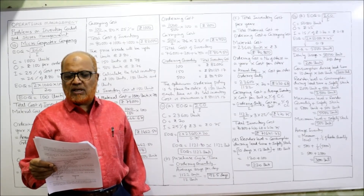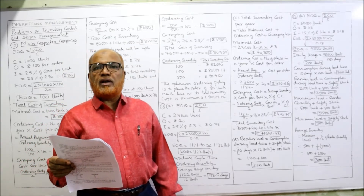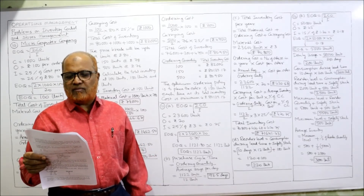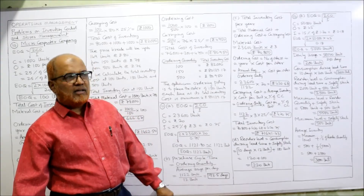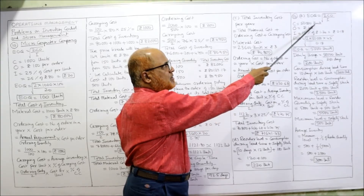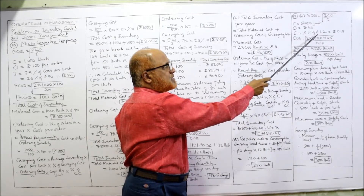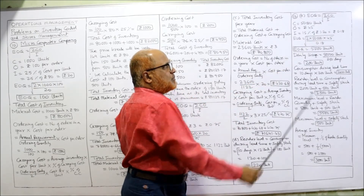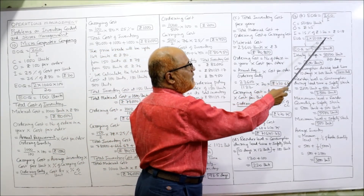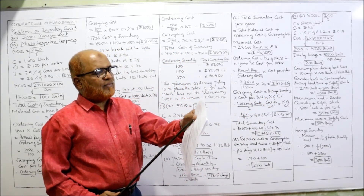Problem 12: A company uses annually 50,000 units of an item each costing 1 rupee 20 paisa. Each order costs 45 rupees, and inventory carrying cost is 15% of the annual average inventory value. Find the EOQ: C = 50,000, O = 45, I = 15% of 1.20 = 0.18. EOQ = √(2 × 50,000 × 45 ÷ 0.18) = 5,000 units.